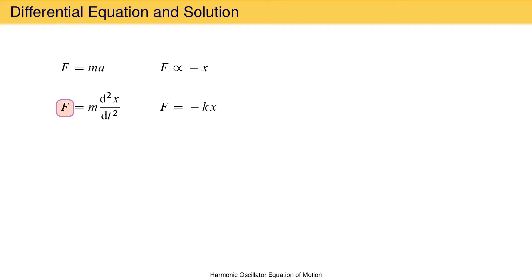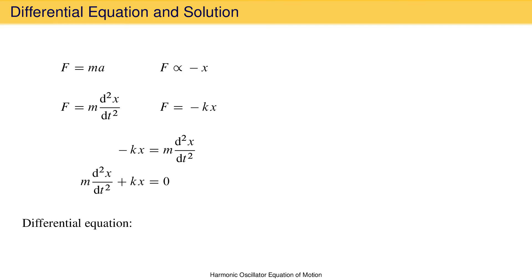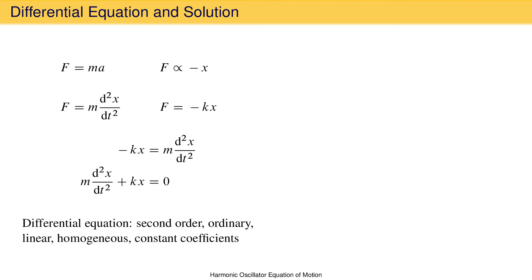Substituting the spring force into Newton's second law, we obtain negative kx equal to mass times the second derivative of displacement with respect to time. Rearranging gives mass times acceleration plus the force constant times displacement equal to zero. This is a second-order ordinary linear homogeneous differential equation with constant coefficients: second-order because the highest derivative is the second; ordinary because it is a function of just one independent variable, time; linear because it involves no powers or products of derivatives; homogeneous because all terms involving x are on the left with zero on the right; and the coefficients are constants, not dependent on time.